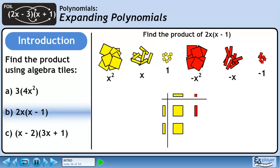A yellow rectangle times another yellow rectangle is a large yellow square. A yellow rectangle times a small red square is a red rectangle. The inner grid contains two large yellow squares, so let's write down 2x squared. There are also two red rectangles, so let's write down minus 2x. The product is 2x squared minus 2x.